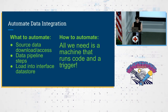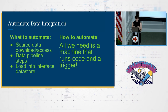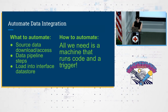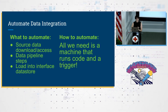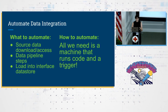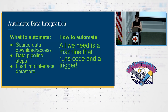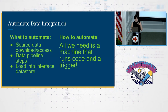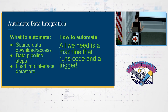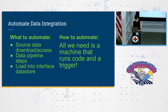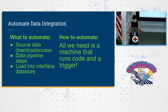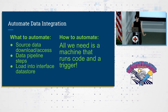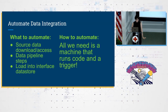When I talk about automating data integration, I mean taking all of the steps where we grab data from upstream sources and integrate them into our modeled warehouse — and automating all of that. We're going to automate source data download and access, data pipeline steps, and loading data into the interface data store. If we have machine learning or model training steps, we'll automate those too. And all we need to automate this stuff is a machine that runs code and a trigger. You can do this with Airflow, cloud provider solutions, or even just bash scripts and cron jobs.